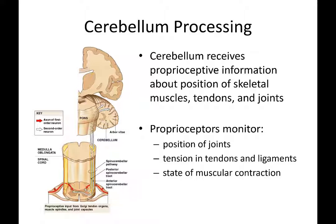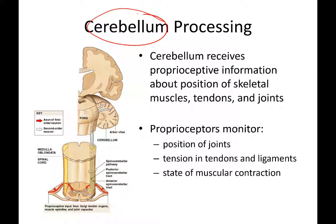The cerebellum processes the positions of our joints and has endings within our tendons and ligaments to understand muscle tension and tone — whether a muscle is contracted or completely relaxed and flaccid. This body positioning information goes to the cerebellum so it can provide additional input to the premotor and primary motor cortex.